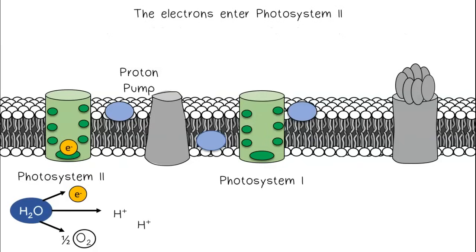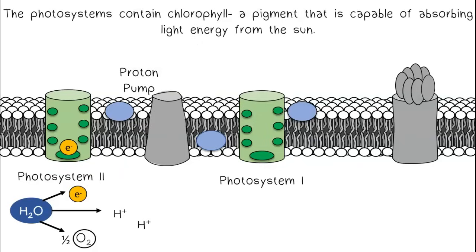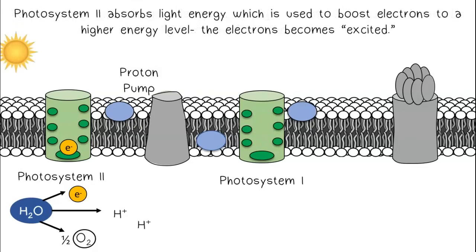The electrons enter Photosystem II. The photosystems contain chlorophyll, a pigment that is capable of absorbing light energy from the sun. Photosystem II absorbs light energy, which is used to boost electrons to a higher energy level. The electrons become excited.